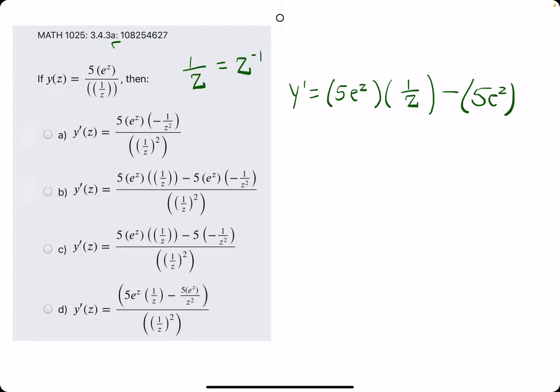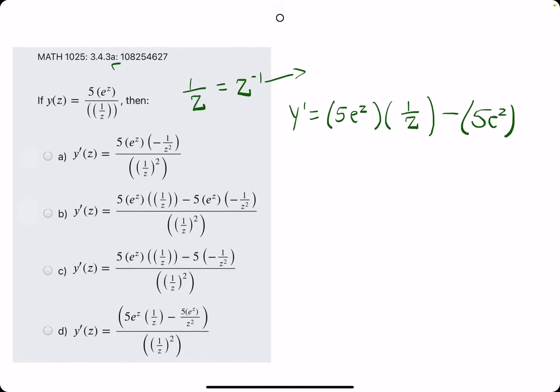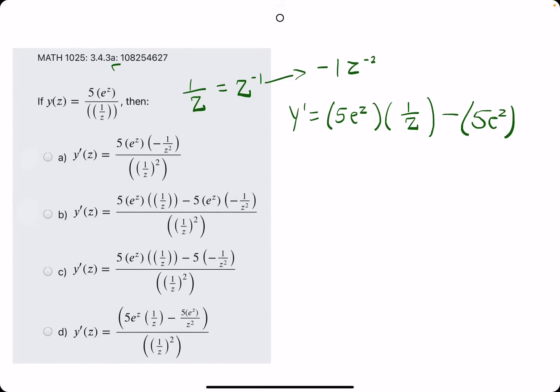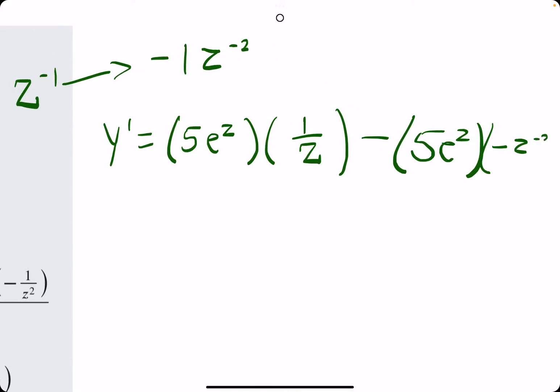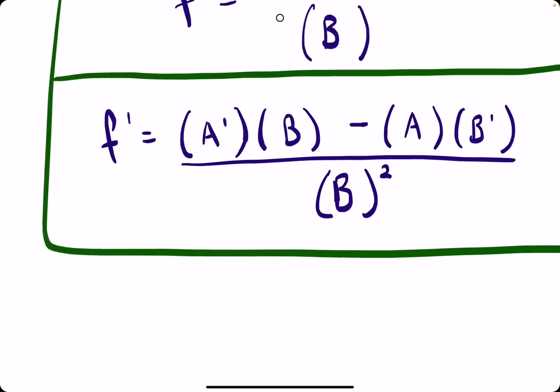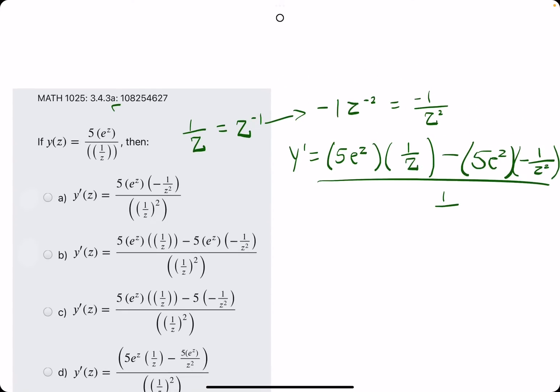1 over z can be rewritten as z to the negative 1. This is the method, anytime you have a variable in a denominator that you need to quickly take the derivative of. The derivative of z to the negative 1 is negative 1z to the negative 2, using power rule. So we have negative z to the negative 2, or negative 1 over z to the positive 2. And then all of this is over b squared, so b squared is 1 over z squared.